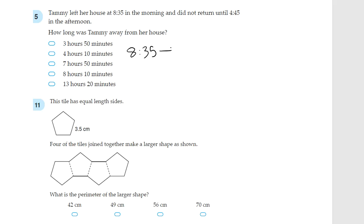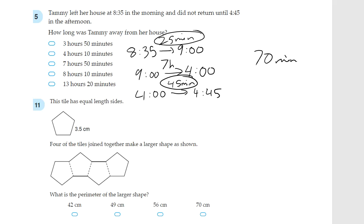8:35am to 9am is 25 minutes. And then 9am all the way to 4pm. 9am to 4pm is 7 hours, because 9am to 12 is 3 hours, and then 12am to 4 is 4 hours. So 3 plus 4 gives you 7. And then we have 4 to 4:45, just 45 minutes. So 7 hours, we add the minutes together. 25 plus 45 gives you 70 minutes. And that is equal to 1 hour and 10 minutes, since there are 60 minutes in 1 hour. So we have 1 hour and 10 minutes plus 7 hours, which gives you 8 hours and 10 minutes. This option is correct.